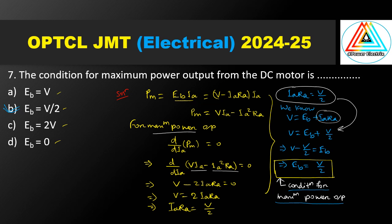To summarize: differentiate the DC motor mechanical power with respect to Ia, set it equal to 0. The value of Ia·Ra obtained is substituted into the voltage equation to get the final relation — that relation is the maximum power output condition: Eb equals V by 2.